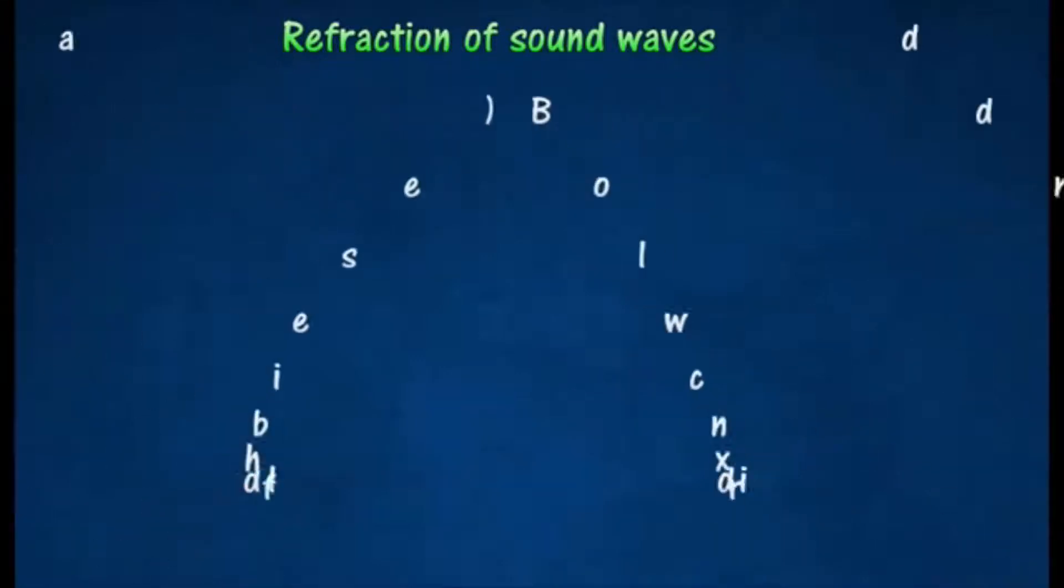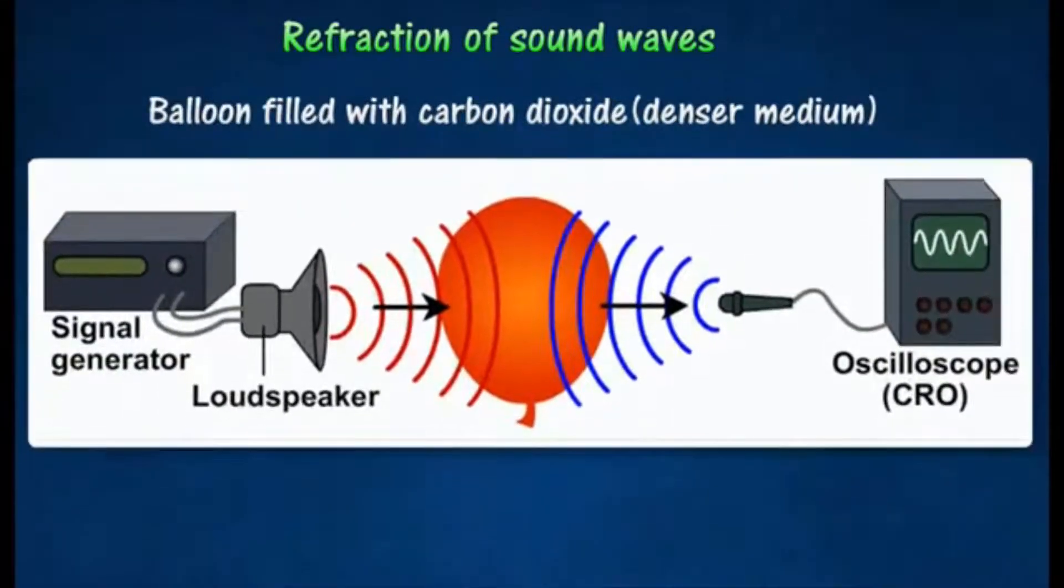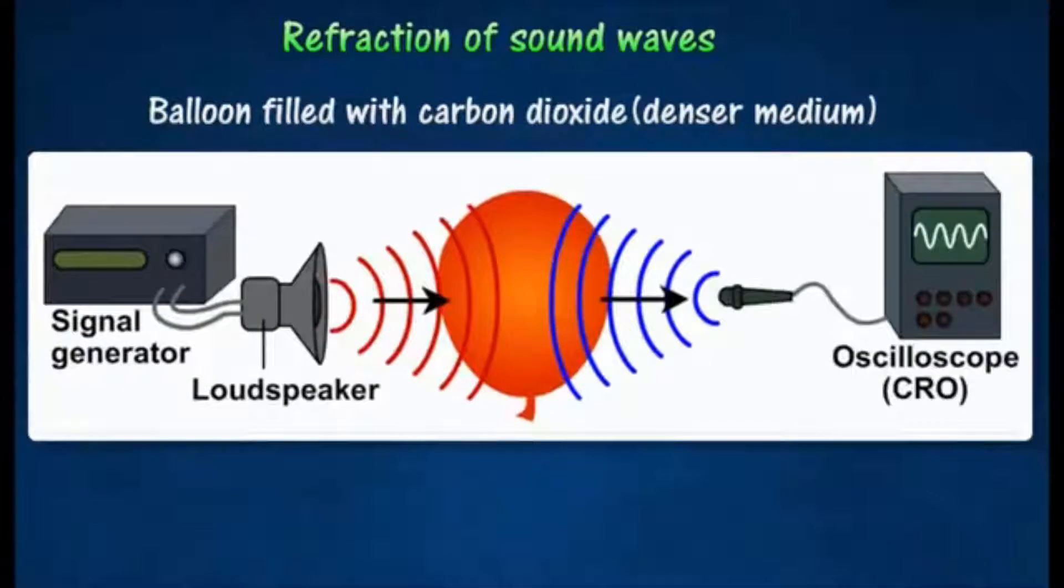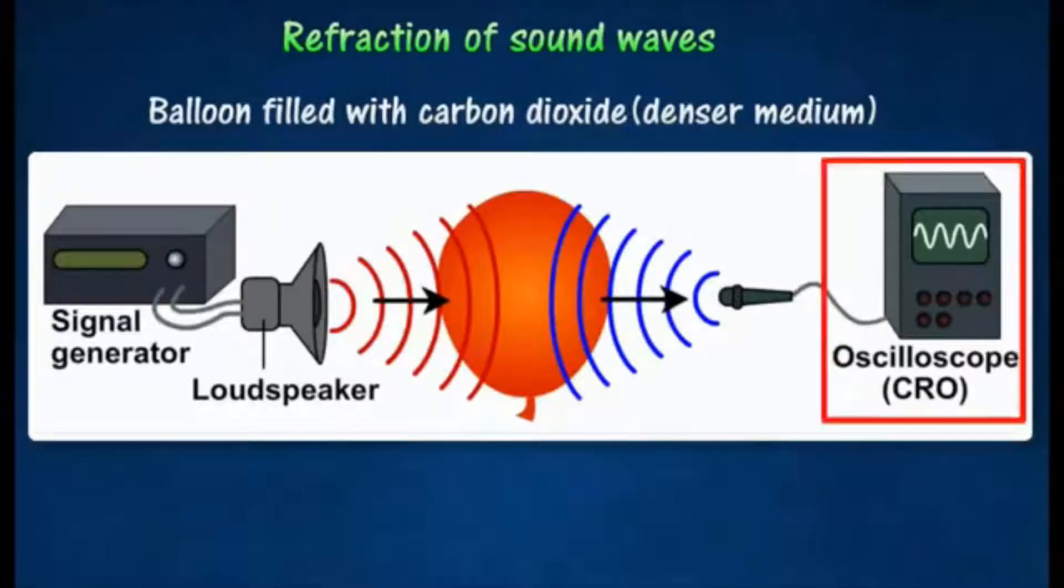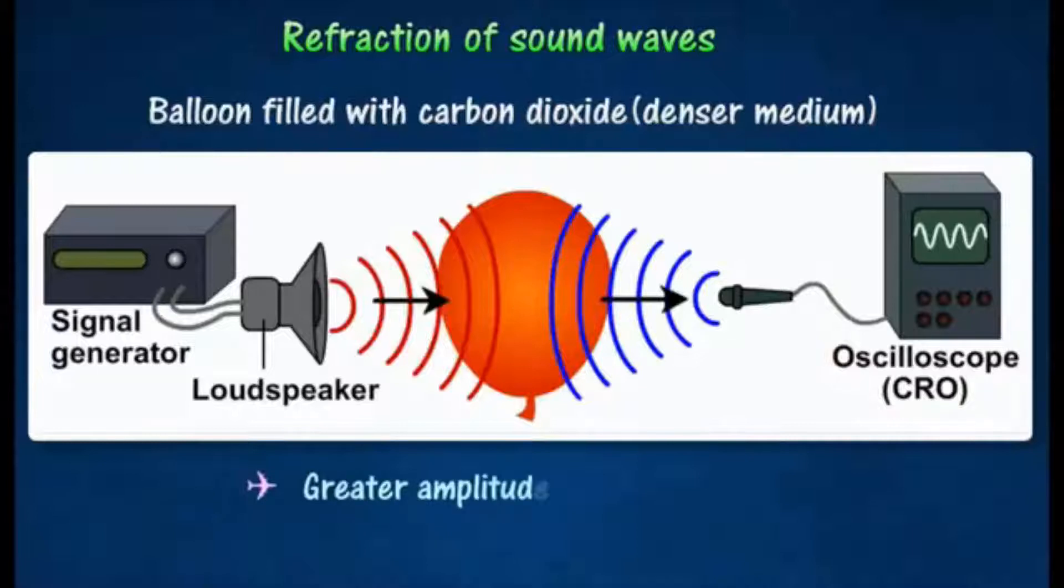To study the refraction of sound waves, a loudspeaker is placed on one side of a balloon filled with carbon dioxide. An oscilloscope is placed on the other side of the balloon parallel with the loudspeaker position. The amplitude recorded by the oscilloscope is greater, which shows that the sound waves bend towards normal.